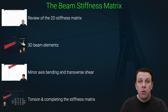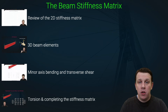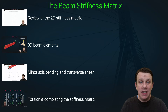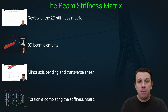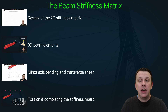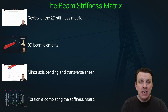We're going to start with a quick review of 2D beam elements. It's important to understand what the stiffness matrix is telling us and what these different stiffness coefficients actually mean. Once we understand that for a 2D element, we're probably going to have 90% to 95% of the hard work done in terms of setting up the 3D element stiffness matrix.